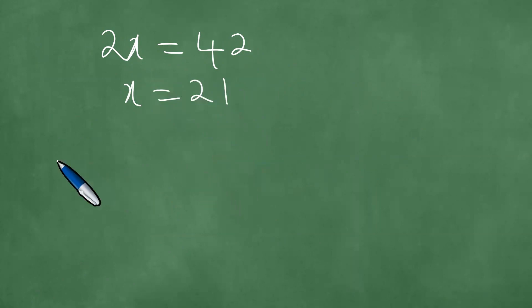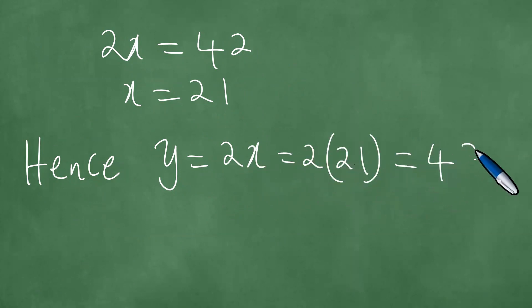If x is 21, hence y is equal to 2x. x is 21, and this is 42.